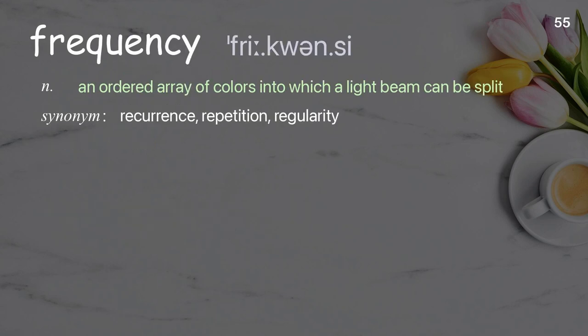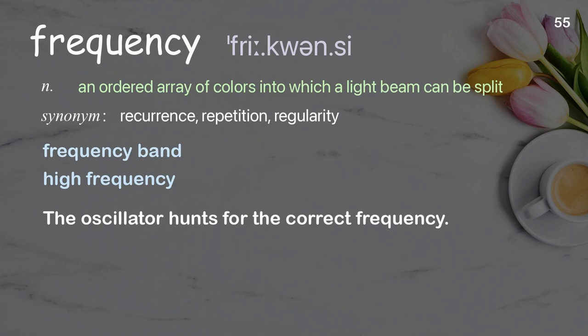Frequency: an ordered array of colors into which a light beam can be split. Examples: frequency band, high frequency. The oscillator hunts for the correct frequency.